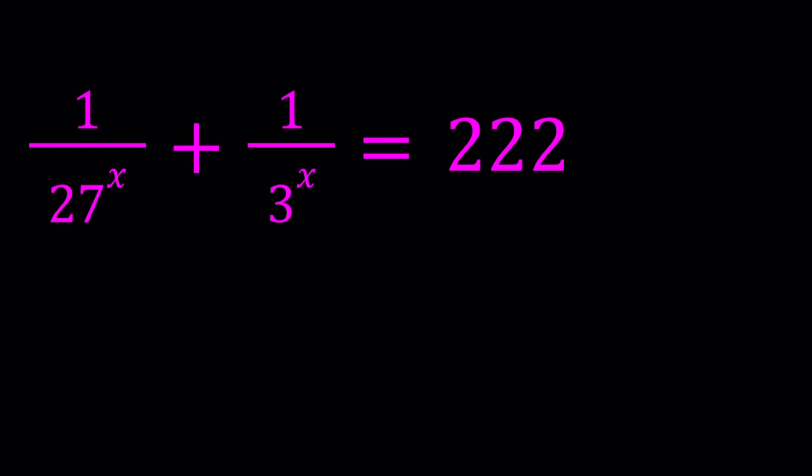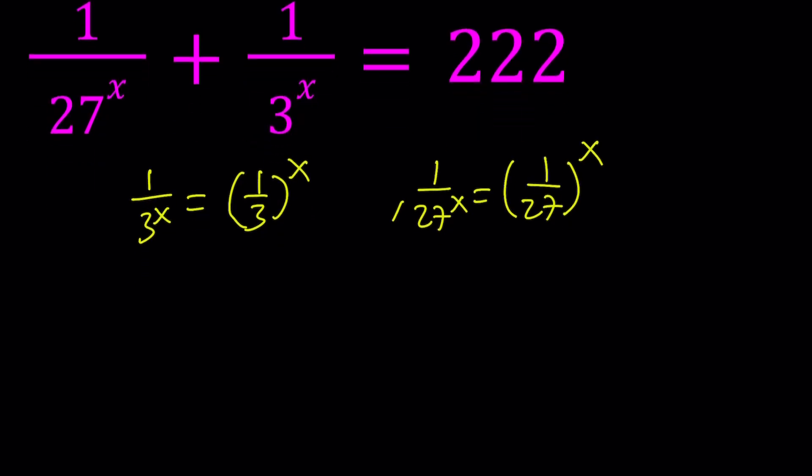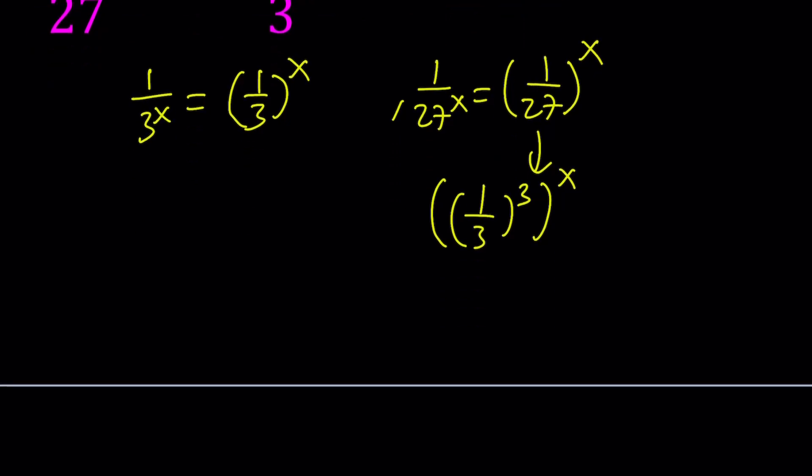I'm going to write 1 over 3 to the power x as 1 over 3 to the power x, and 1 over 27 to the power x as 1 over 27 to the power x. Notice that 1 over 27 is one third cubed, so this can be written as 1 over 3 to the third to the power x. We can switch the x and 3 because the exponents are multiplied. This gives us something nice. If we use substitution, let's replace 1 over 3 to the power x with u. Then this is going to become u cubed.